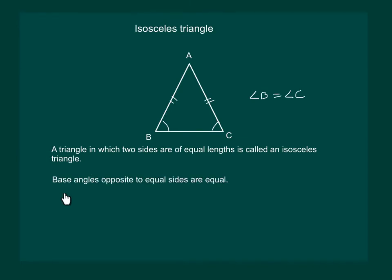Hence, we conclude that in an isosceles triangle, two sides have the same length, and the base angles opposite to the equal sides are equal.